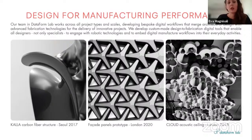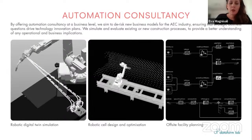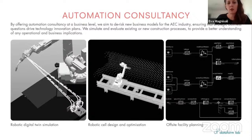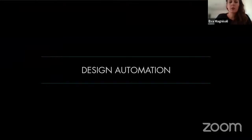We don't want this to be something only for specialists. We also use robotic prototyping to check for manufacturability, ensuring all generated designs can actually be built without obstacles at the end of the process. And critically, we look into automation consultancy to ensure that introducing robotics in construction isn't just a technology trend — there must be a strong business case behind the integration of automation for off-site manufacturing and construction, including robotic cell design, optimization, and off-site facility planning.